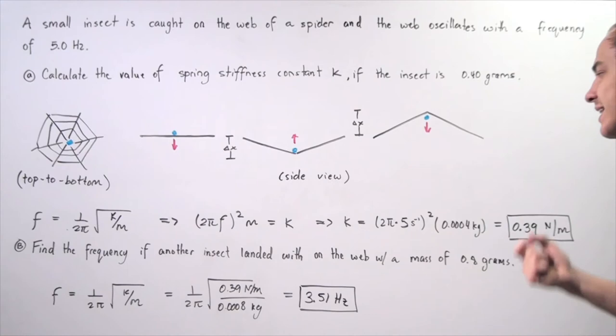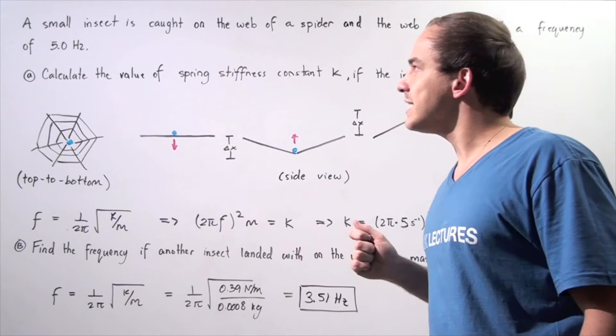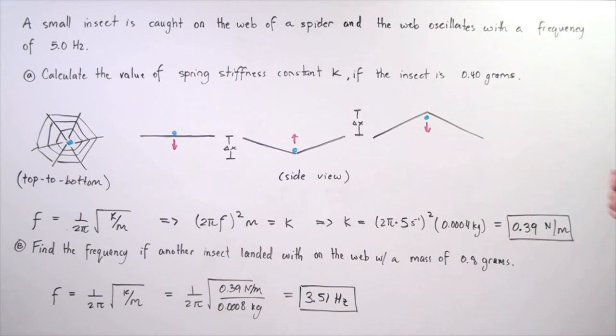where frequency is simply 5 cycles per second. So we multiply these quantities out and we get a value of 0.39 newtons per meter.